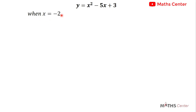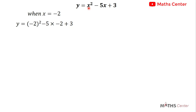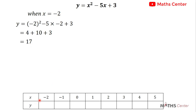The first x value is -2. We substitute x = -2 into y = x² - 5x + 3. Remember to put a negative number in brackets when squaring it. So y = (-2)² - 5 × (-2) + 3 = 4 + 10 + 3 = 17. When x = -2, y = 17.